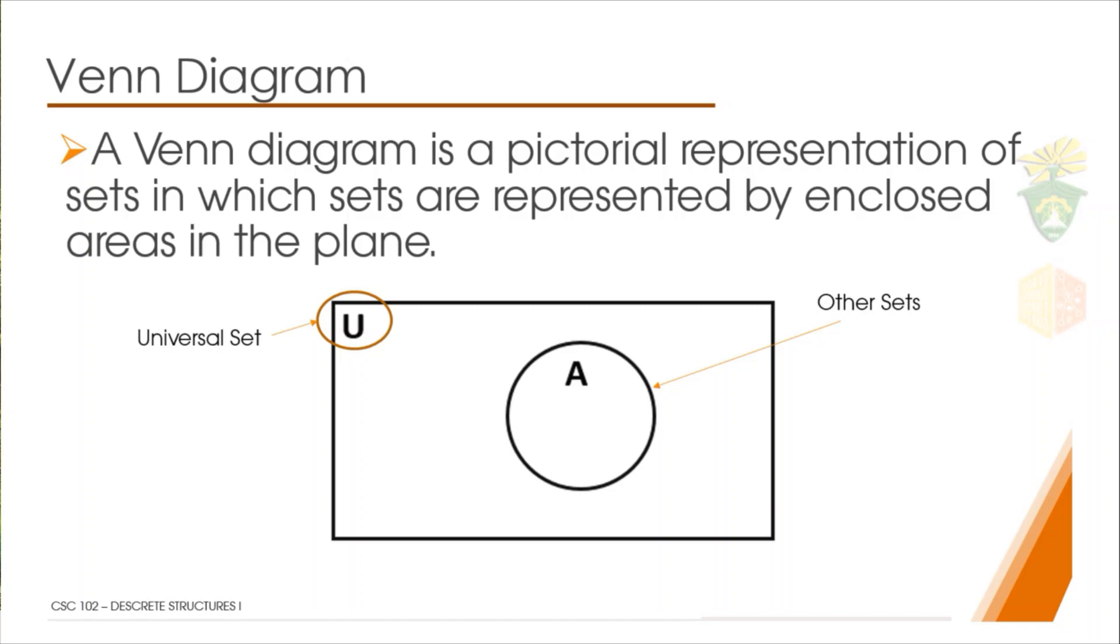Inside the universal set is where the other sets should be found. So what is a universal set? Basically, a universal set is all those objects that are found inside the universe, or all the objects that could be inside the other sets.